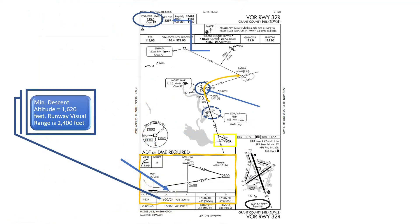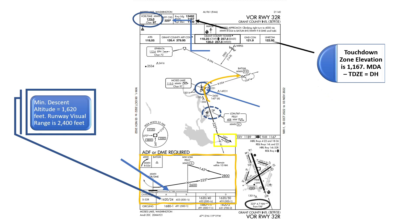The minimum descent altitude for this VOR approach is 1,620 feet and the runway visual range is 2,400 feet. Notice the touchdown zone elevation for Grant County International Airport is 1,167 feet. The minimum descent altitude of 1,620 feet less the touchdown zone elevation of 1,167 feet equals the decision height of 453 feet. The pilot would need to execute the missed approach if the runway was not in sight at the time of reaching the decision altitude.